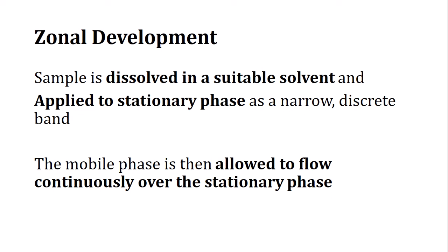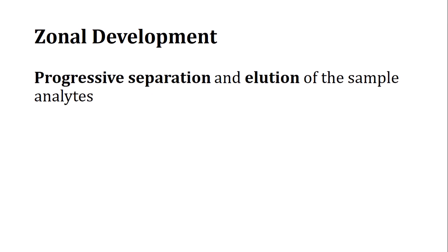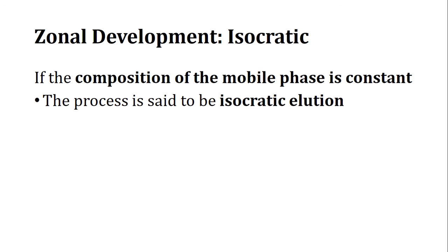There are voids between the stationary phase particles, and analytes partition between the stationary and mobile phases continuously. The analyte with good solubility toward the mobile phase elutes first. If an analyte cannot be eluted, a different solvent can be used as the mobile phase. When the mobile phase composition is kept constant throughout the process, this is called isocratic elution.